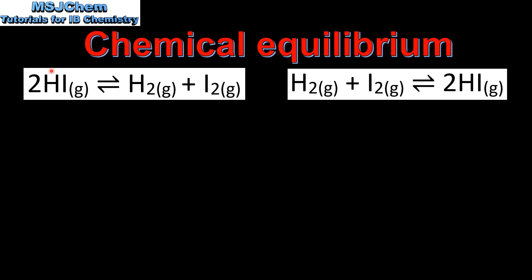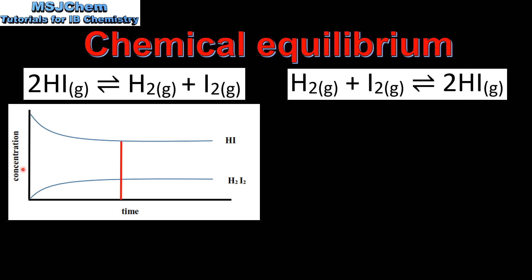Let's look at the graph of concentration against time for the forward reaction, starting with hydrogen iodide decomposing to form hydrogen and iodine. The concentration of hydrogen iodide starts high and decreases as the forward reaction occurs, while the initial concentrations of hydrogen and iodine start at zero and increase. At the point in time indicated by the red line, the concentrations of hydrogen iodide, hydrogen, and iodine become constant, shown by straight lines. At this point the system has reached dynamic equilibrium where the rate of the forward reaction equals the rate of the reverse reaction.